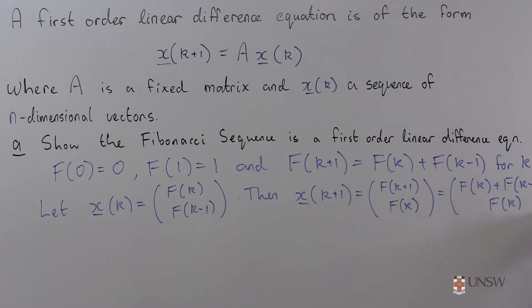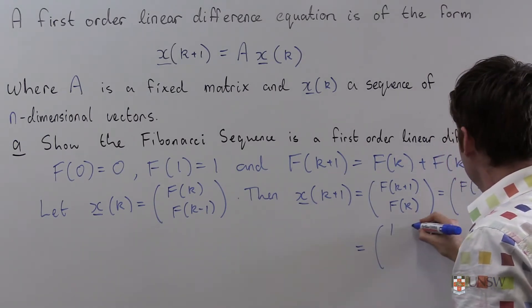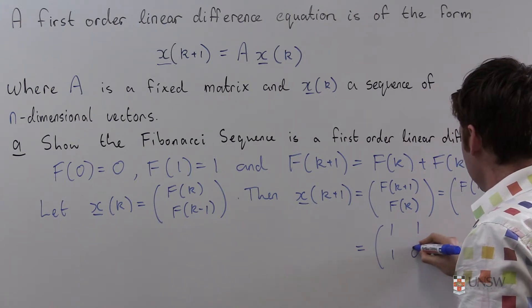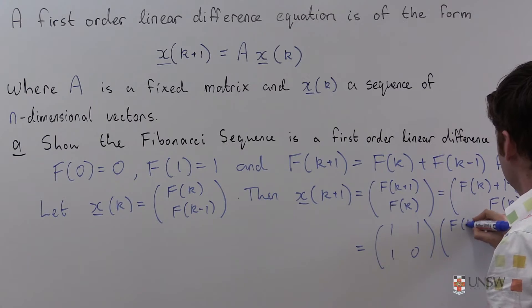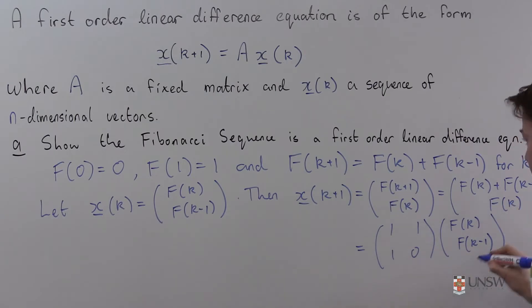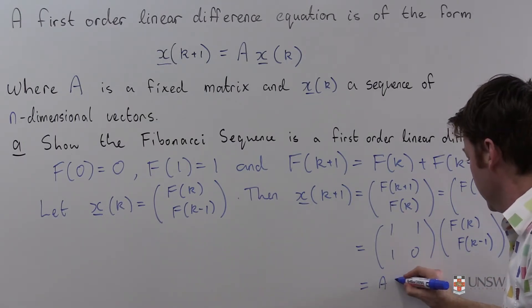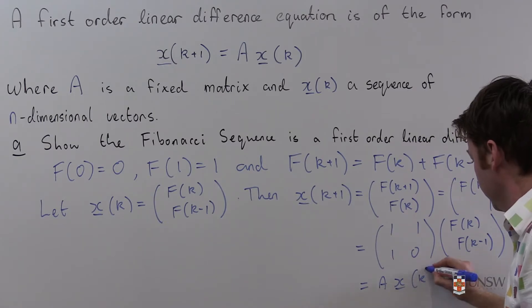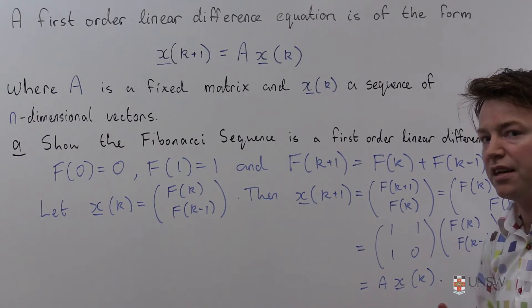Which I can rewrite as the matrix [1, 1; 1, 0] times f(k), f(k-1), which is of the form A times x_k. Good, so the Fibonacci sequence is in fact a first-order linear difference equation.